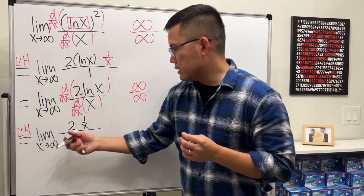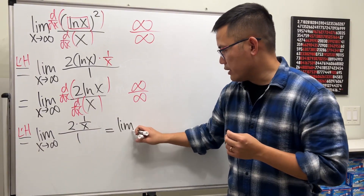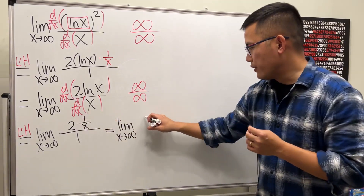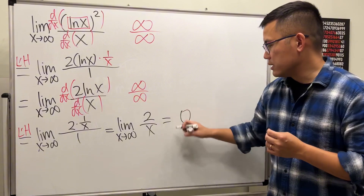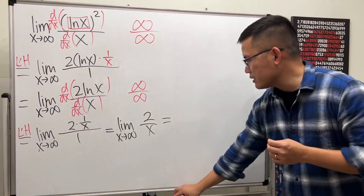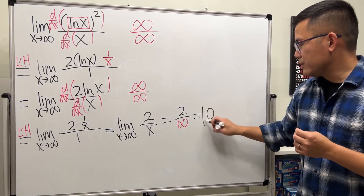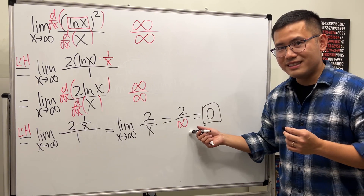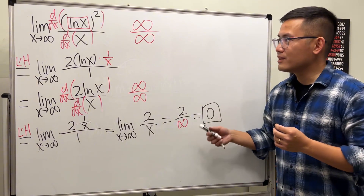This is just asking for the limit as x approaches infinity of 2/x. Plugging in infinity gives 2 over infinity, which equals zero. Remember: a finite number over infinity gives zero. So the final answer is zero.